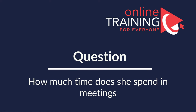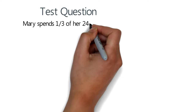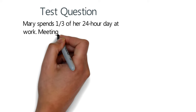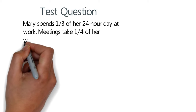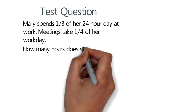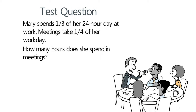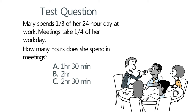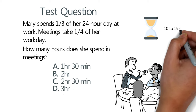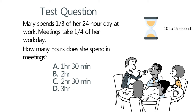Here's an interesting question about planning your day. Mary spends one-third of her 24-hour day at work, and meetings take one-fourth of her work day. How many hours does she spend in meetings? Choices: A: 1.5 hours, B: 2 hours, C: 2.5 hours, D: 3 hours. Give yourself 10 to 15 seconds.